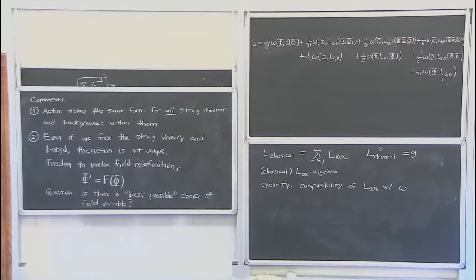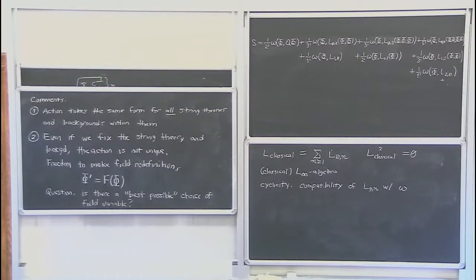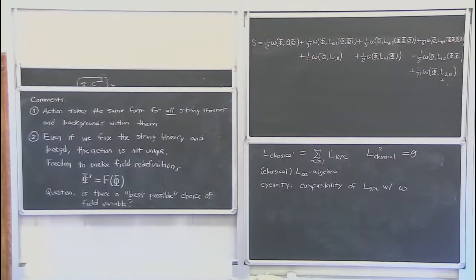Recent studies of closed string field theory have not really needed to commit to a particular choice of what these products really are — one can make general arguments. In principle, one can also have an inhomogeneous term in the field redefinition, which corresponds to a shift of the closed string background, i.e., expanding the theory around a solution of the field equations. But this modifies the form of the BRST operator so it's not just Q.